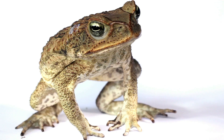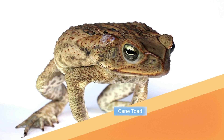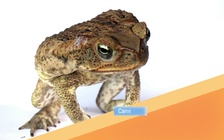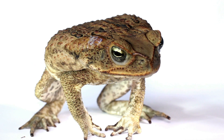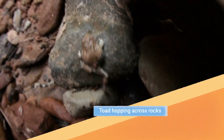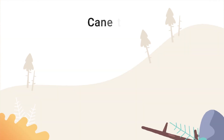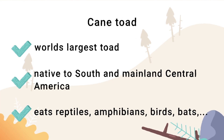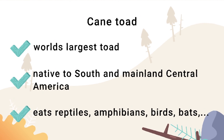This is a cane toad. Here you can see a toad hopping across rocks. The cane toad is the world's largest toad. It is native to South and Mainland America and eats reptiles, amphibians, birds, and more.